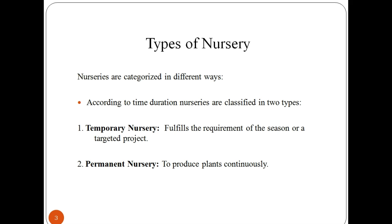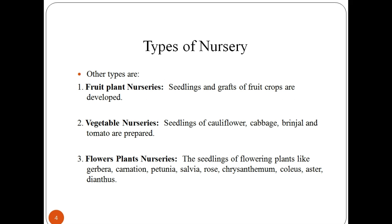According to the types of plants produced, nurseries are classified into the following types. In fruit plant nurseries, seedlings and grafts of fruit crops are developed.